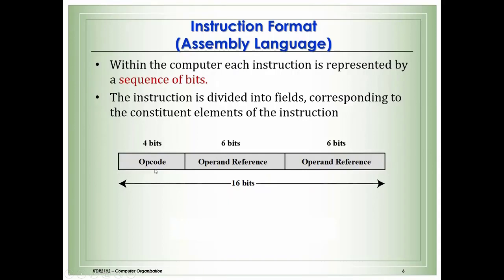For example, four bits may be reserved for the operation code (opcode), which defines the kind of operation — like divide, multiply, add, or subtract. Then we have the operand references: for instance, six bits for each operand field — source operands and the result — and four bits for the opcode defining what operation to perform on those operands.